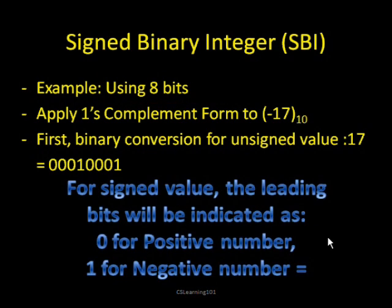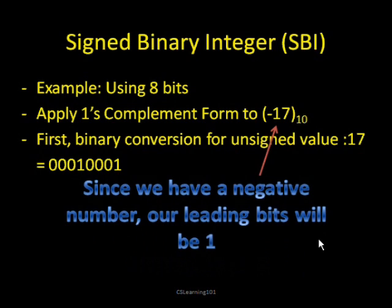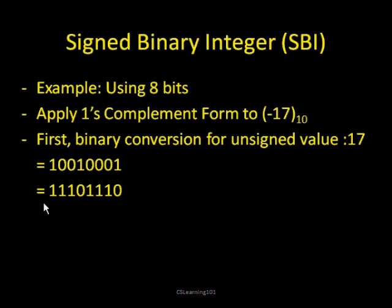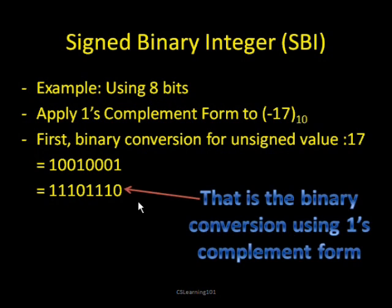Now we want to use the 1's complement process on it. For signed values, the leading bit is always 0 if it's a positive number, or 1 if it's a negative number — so the very first digit always tells you if it's positive or negative. Since our number is negative, an easy way to make sure this works is to ensure that the very first digit of our final number is 1. Now apply the 1's complement for the rest, and you get 11101110. That's negative 17 using the 1's complement form.